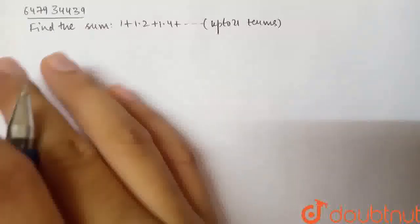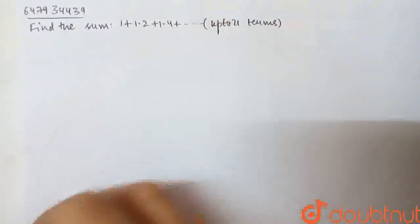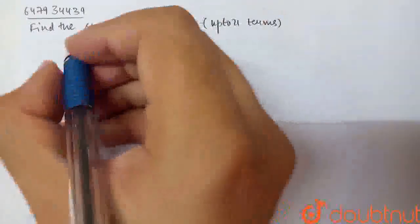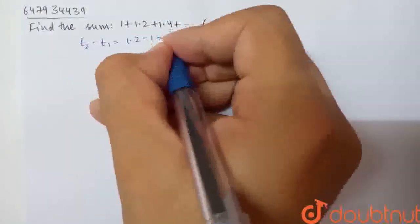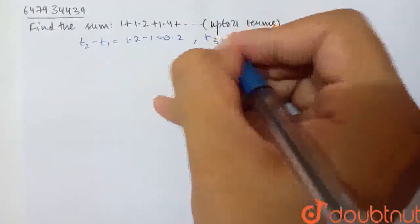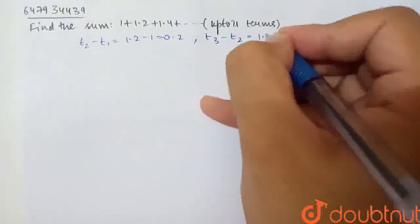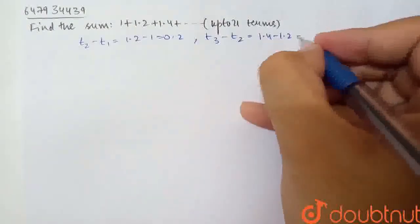This question says, find the sum of this AP up to 21 terms. Now, to verify it's an AP, I will check T2 minus T1, that is 1.2 minus 1, which is 0.2. T3 minus T2 equals 1.4 minus 1.2, which is 0.2.